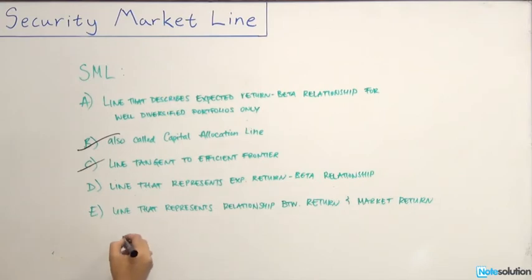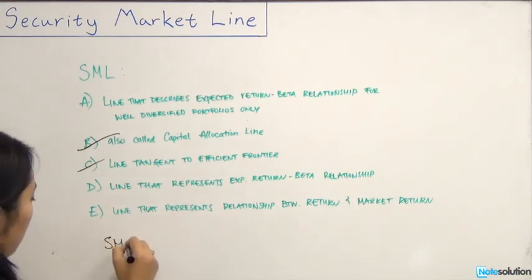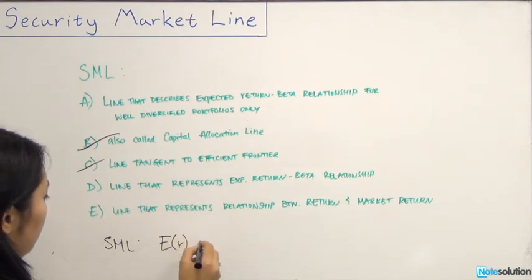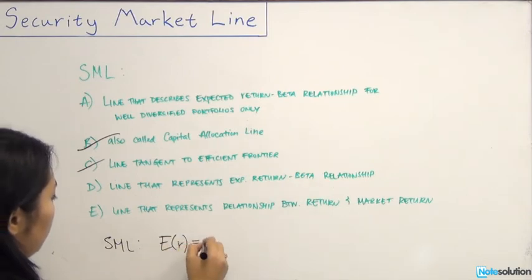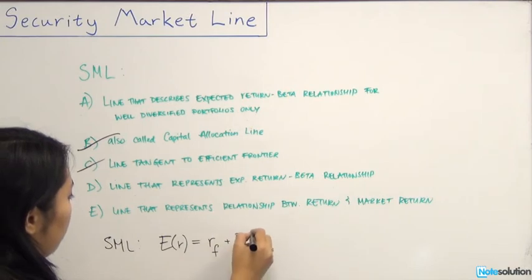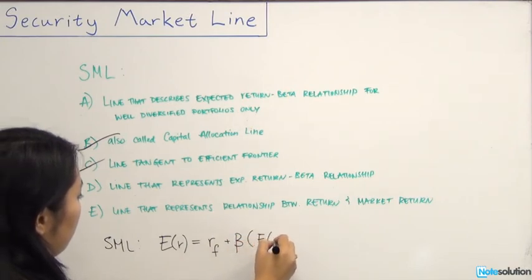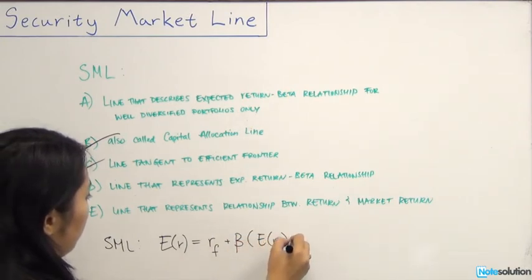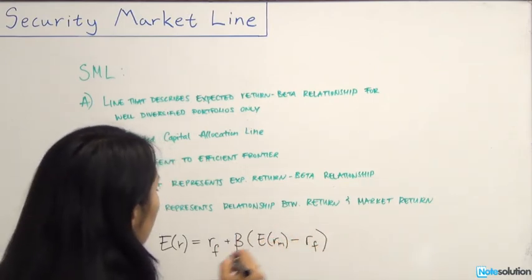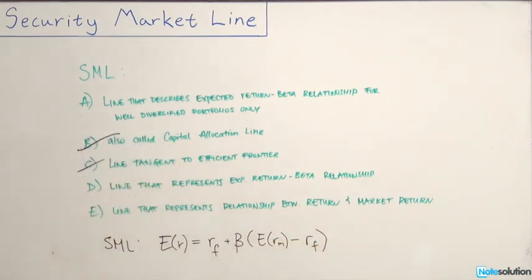The security market line equation is: expected return on an individual security equals the risk-free return plus beta times the risk premium — that is, the expected market return minus the risk-free rate. That equation defines the expected return for all risky assets as well as risk-free assets, because the beta for risk-free assets is zero.